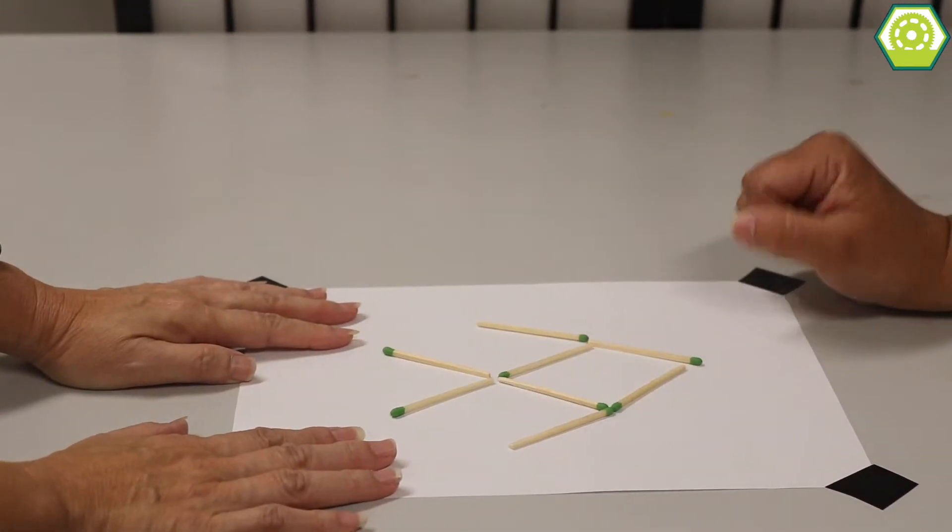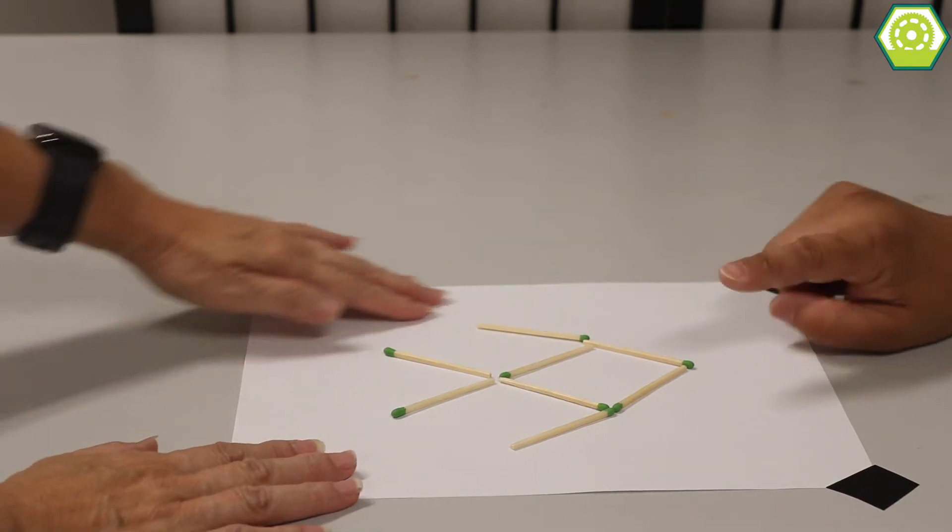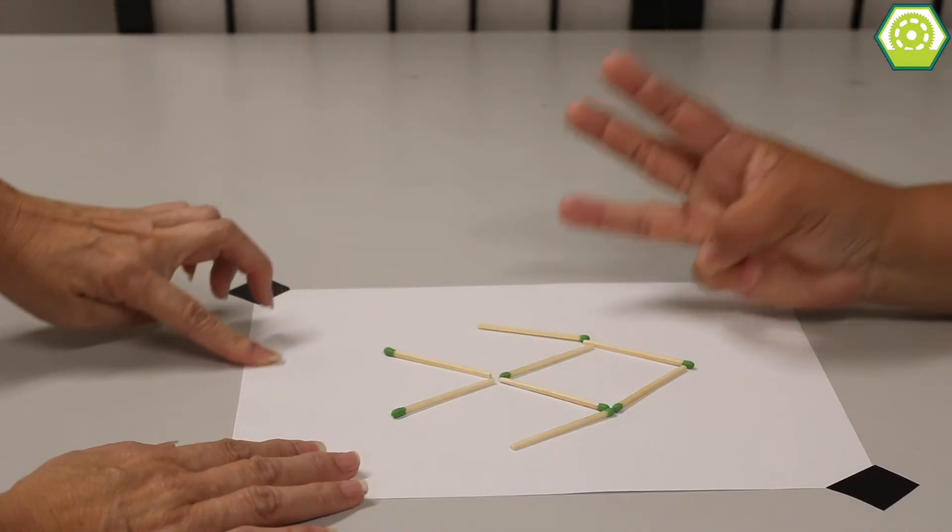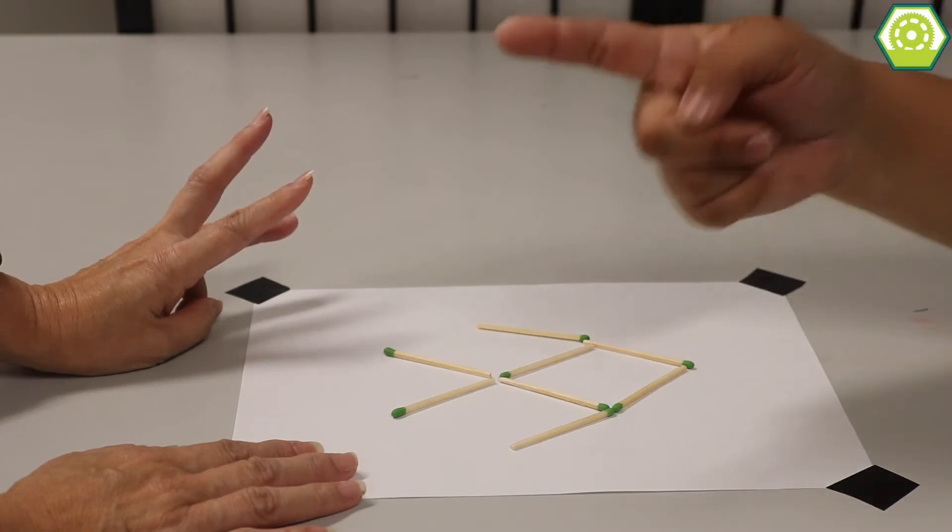What does that look like? That looks like a fish to me. Okay, so here's the puzzle and the challenge. You can only move three of the matchsticks. But you have to make this fish change direction.